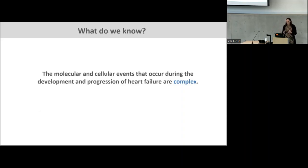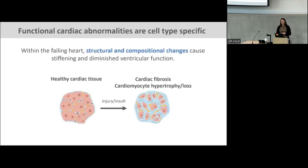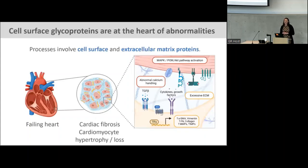So what do we know? We know that the molecular and cellular events that occur during the development and progression of heart failure are really complex. My entire research talk today is going to focus on one class of molecules — the proteins that sit at the surface of the cell. This is not to say that they're the only thing that's important, but they're one of the least well-studied and less well-understood molecular components of the human heart. The human heart has lots of different cell types that respond to insult and injury in a cell-type specific way.